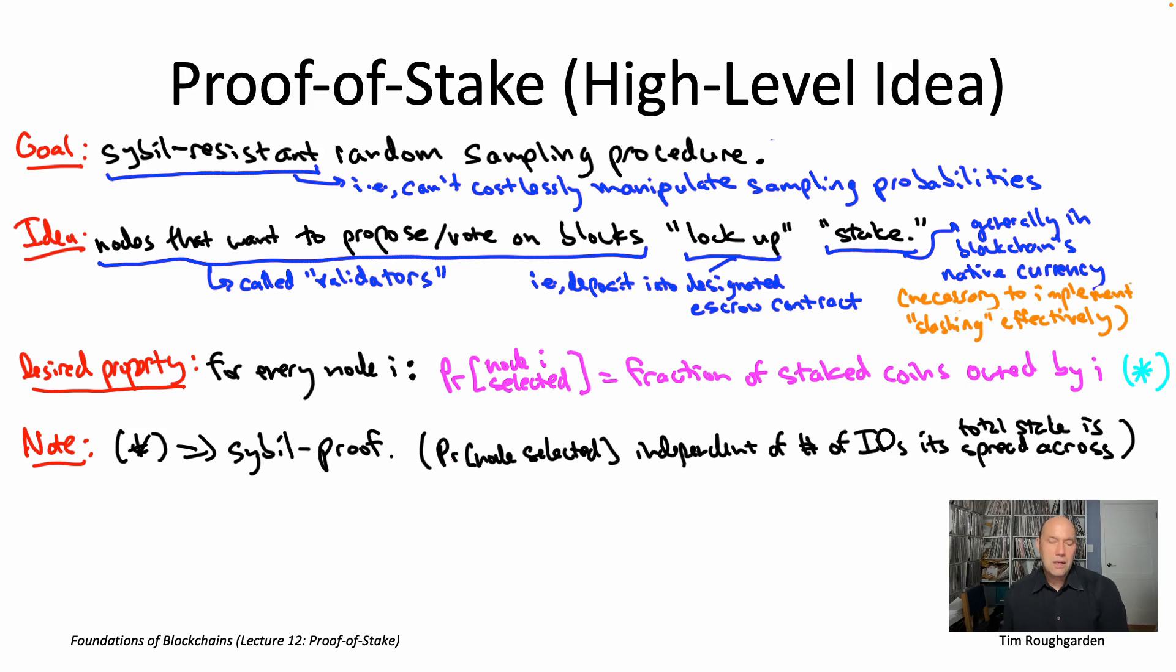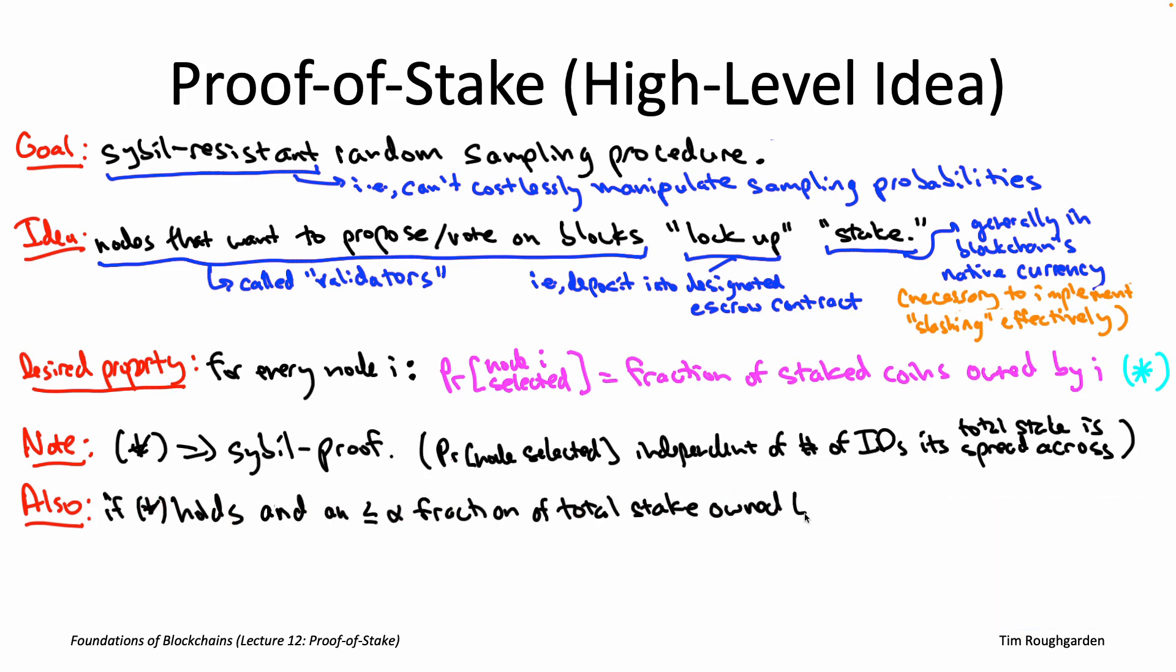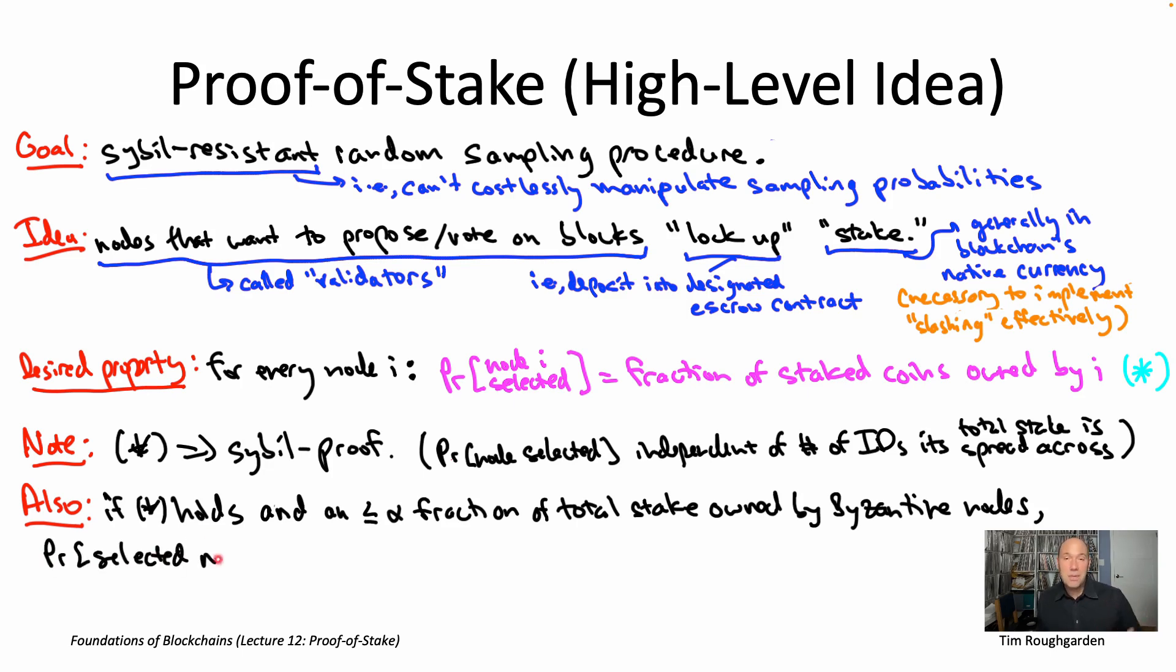So that's the analog of corollary number one from lecture number nine. Next is going to be the analog of corollary number two from that lecture. So always when we're designing consensus protocols, we need to impose some kind of bound on the power of the adversary, like the power of the Byzantine nodes. And given this property, given if we're going to be selecting nodes with probability proportional to stake, it's clear what that assumption on the adversary has to be about. It has to be an upper bound on the fraction of the stake controlled by Byzantine nodes. And so in particular, if we assume that at most an alpha fraction of the stake is controlled by Byzantine nodes, then the property that any given output of this random selection procedure, the probability of it being a Byzantine node is at most that same upper bound alpha. And as we know from previous lectures with longest chain consensus, you generally start getting your guarantees once alpha is less than a half, once you have a strict majority of honest participation. And with BFT type protocols, usually you require the stronger condition that alpha is going to be less than a third.